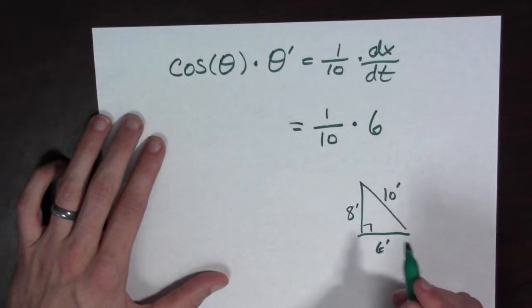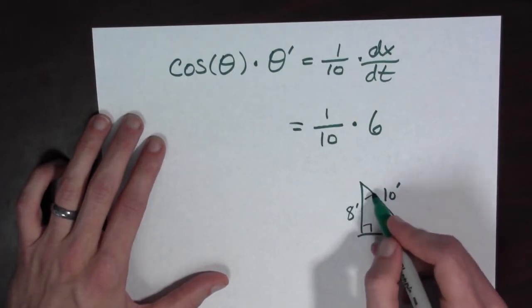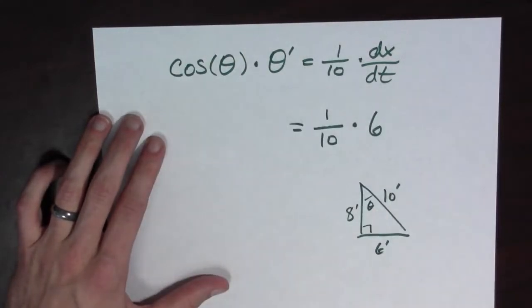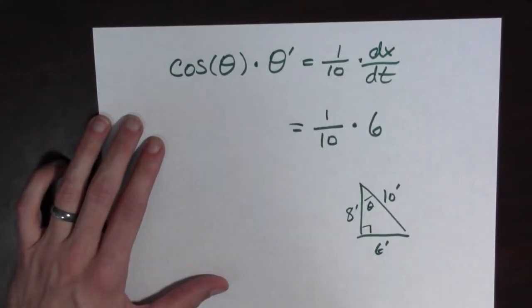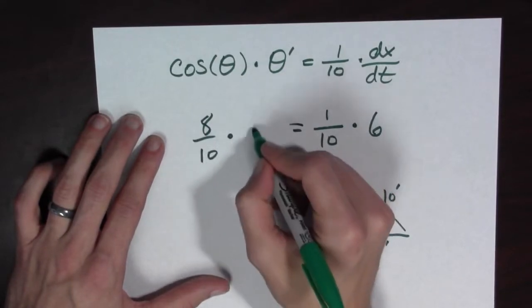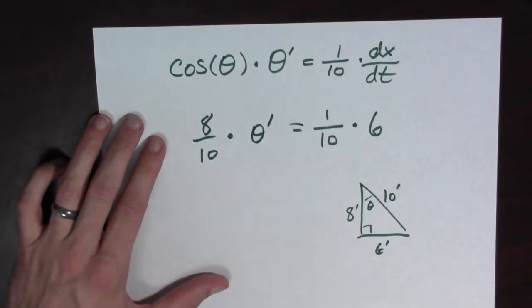Aha! And so what this means is if I have theta here, I can now compute cosine very easily. Cosine of theta is going to be eight over ten times theta prime.